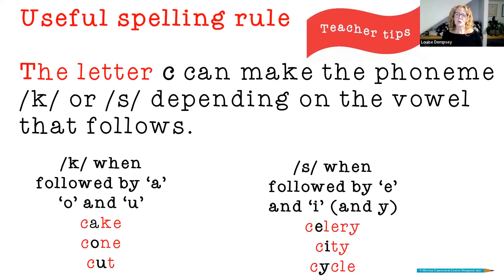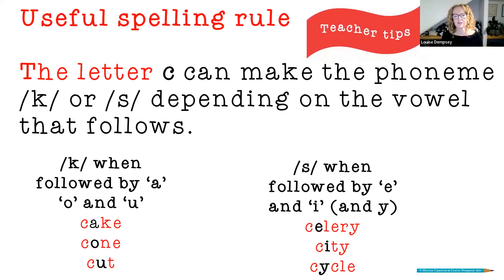So here's the spelling rule, and this can be downloaded from our website, The Literacy Place. You could share this with kids, but get them to work it out first and then share this as a summary. The letter C can make the phoneme K or S depending on the vowel that follows, and there's a summary at the bottom.